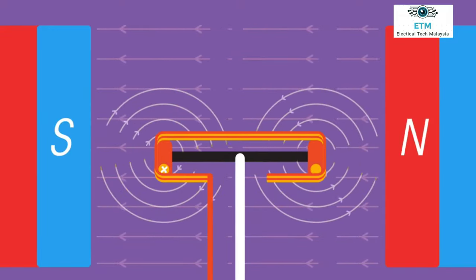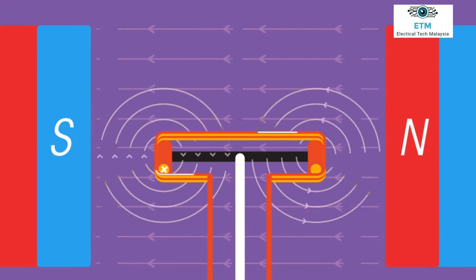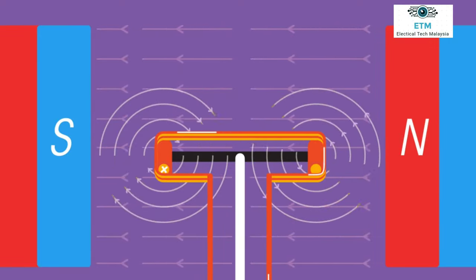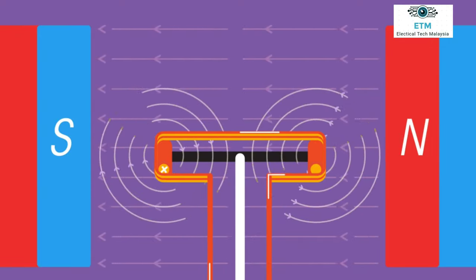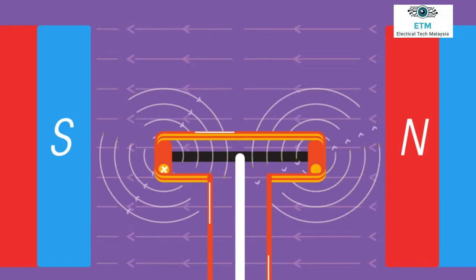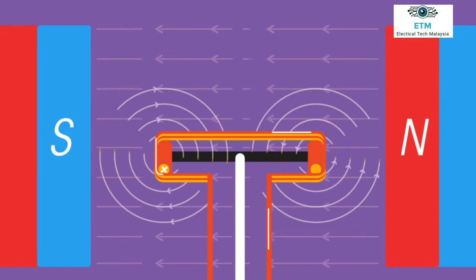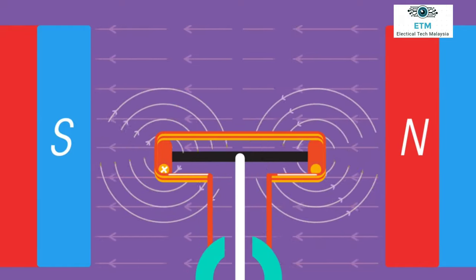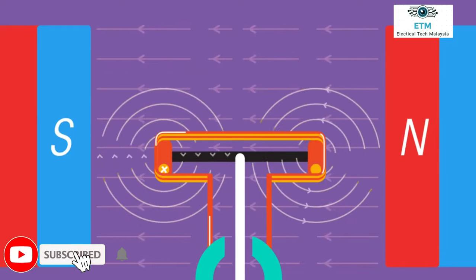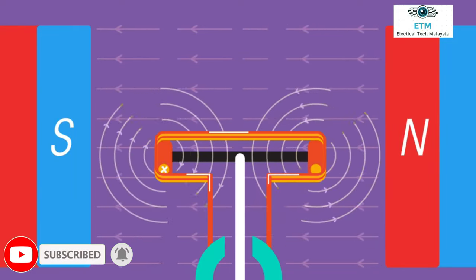The clever bit is how to supply a current to a spinning coil so that it always flows in the same direction, ensuring that the upward and downward forces are always on the same side. This is done with a split ring commutator. For the exact details as to how this works, we can leave for another time.